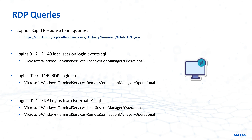Now you may think it's a little bit redundant to query both of these event logs, but there's a reason for that. It may be that the attacker has cleared one of the event logs but not the other, or there was an error in logging that event and one event log has it and the other doesn't. So it's always good to use as many sources as possible when you're trying to look for things like RDP lateral movement.